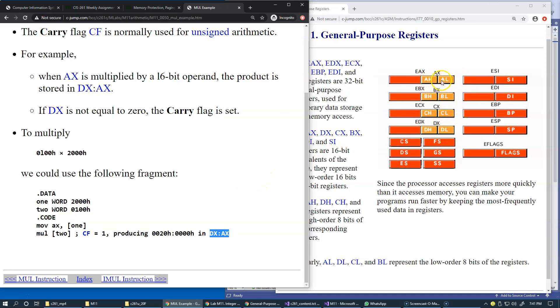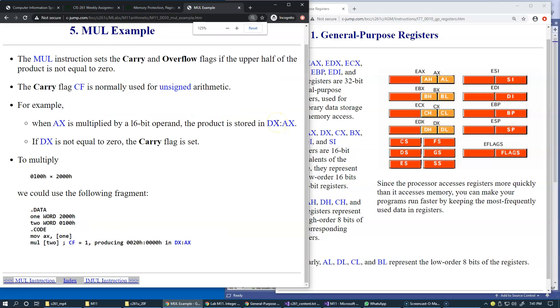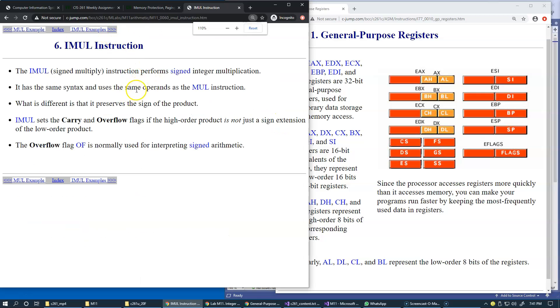Sign multiplication, IMUL, which stands for integer multiplication, performs signed integer multiplication. Same syntax, same approach. What's different is it preserves the sign of the product. As we discussed, two negative numbers multiplied yield a positive number. IMUL sets the carry and overflow flags if the higher order part of the product is not just a sign extension.